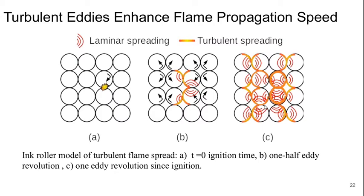At a full eddy revolution, we can see that the laminar propagation in itself is not even enough to have completely covered most of the eddies right at the site of combustion, and yet we have flame fronts that have propagated very far away — several eddies away. So we can visually see that those turbulent structures being present will significantly enhance the rate at which the flame is able to spread around.